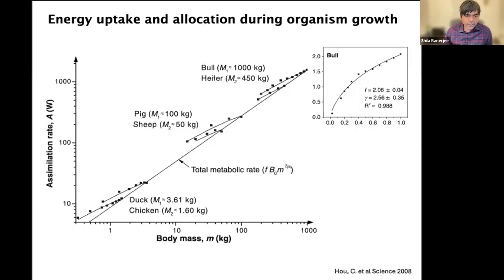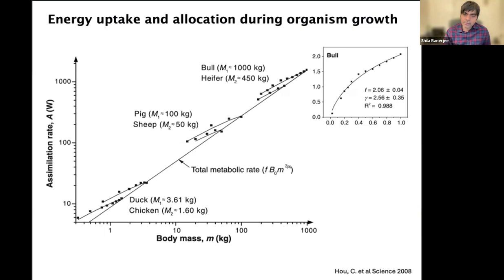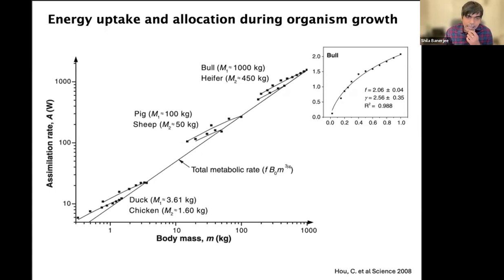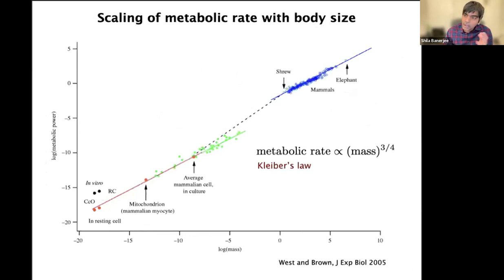The idea is that all living organisms face the challenge of continuously investing energy to drive growth, biomechanical activities, and the maintenance of mass and structure. Energy uptake and allocation strategies have been studied for a long time in ecology, especially for birds and mammals. The plot here shows how food assimilation rate of different mammals and birds changes with body mass — there is a sublinear increase of assimilation rate with body mass, which is intimately connected to how metabolic rate scales with organism size.